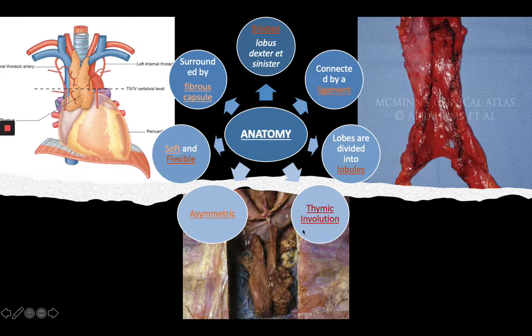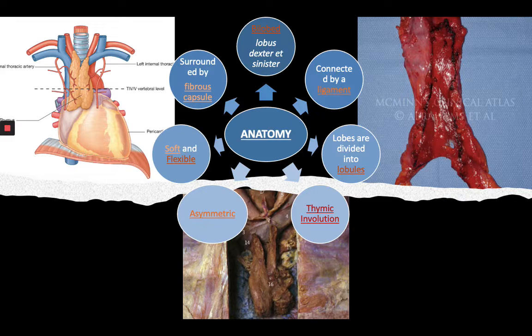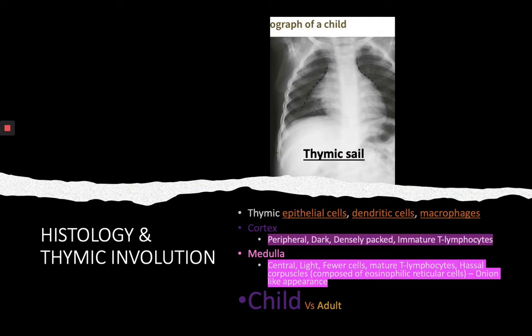It is an age-related phenomenon where, in simple words, in a child the thymus is the biggest. At puberty it will start to atrophy, and in an adult it will be a much smaller organ. In the elderly it's barely identified as an organ, and I'll show you more pictures.